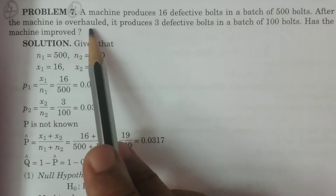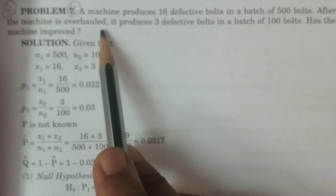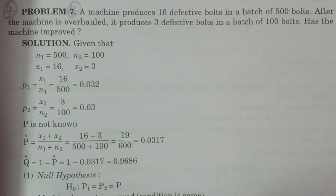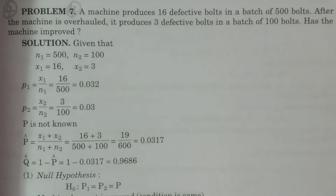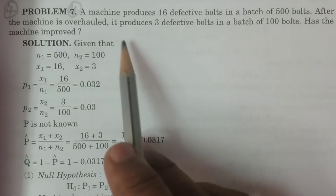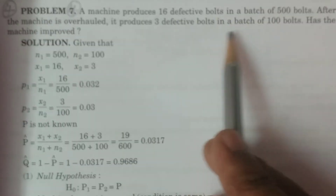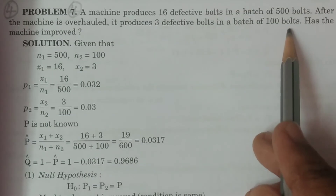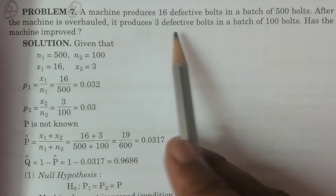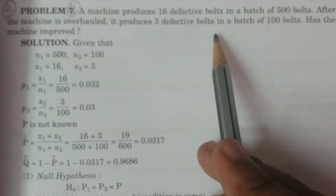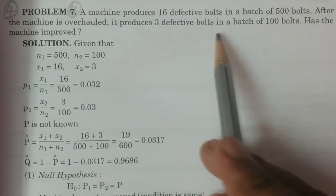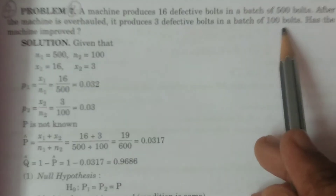After the machine is completely overhauled, it produces 3 defective bolts in a batch of 100 bolts.